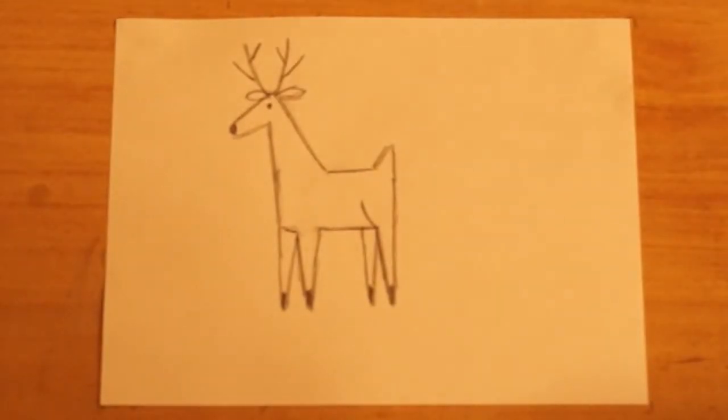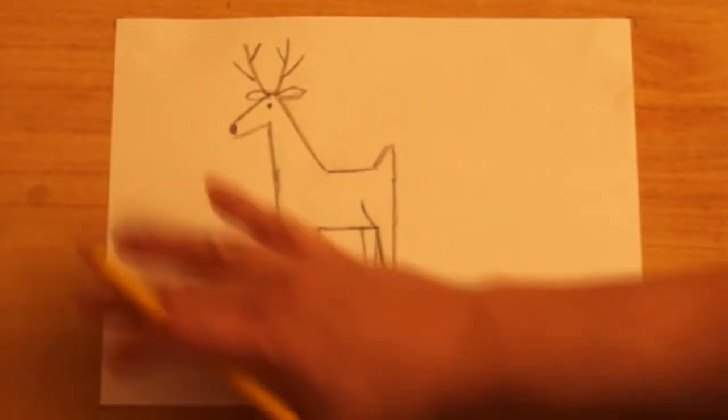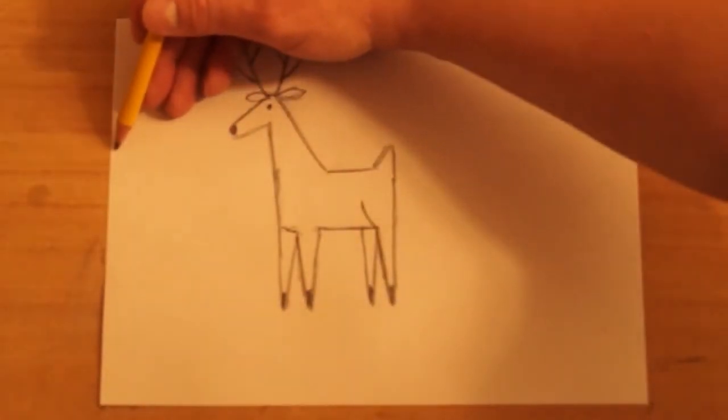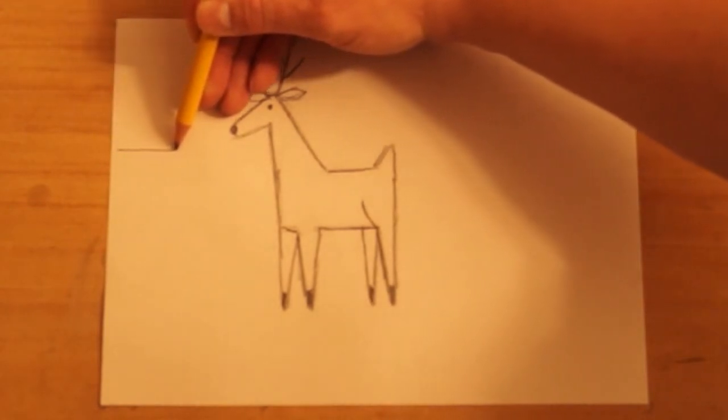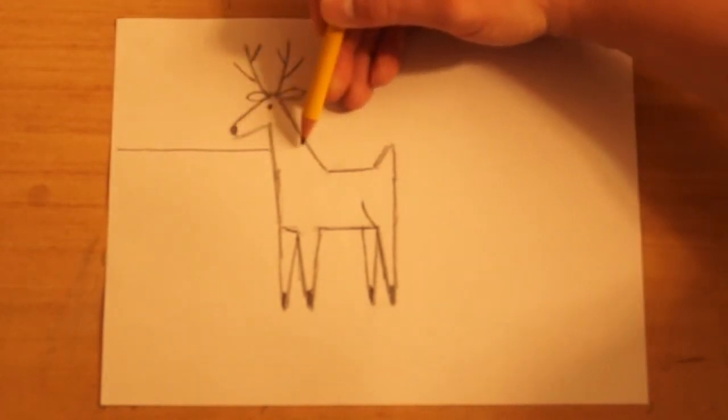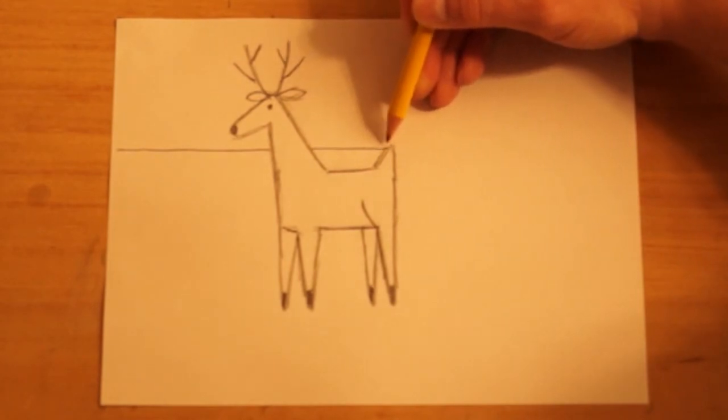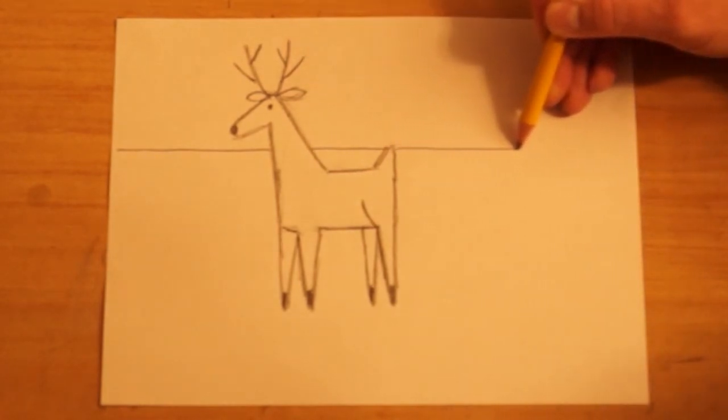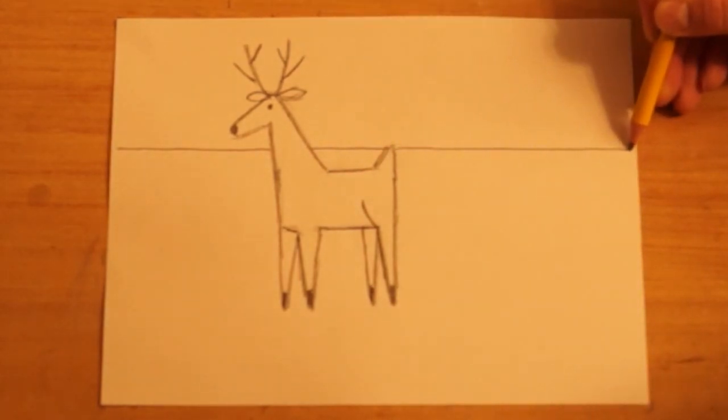And then we want to make it look like our deer is standing somewhere, not just floating in space. So I'm going to draw the horizon line. This is the line where the sky and the earth meet. So now he looks like he's standing on the ground.